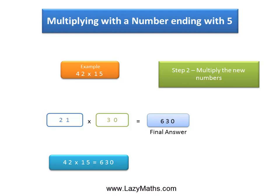So the final answer is 42 times 15 equals 630. And that's it. Thank you.